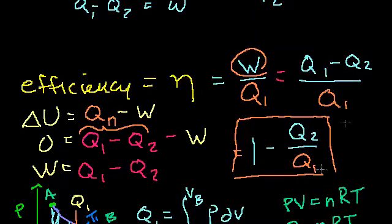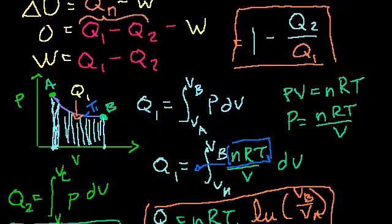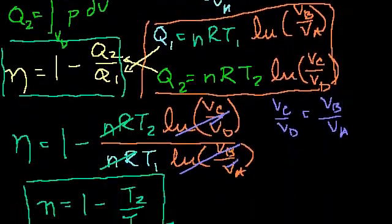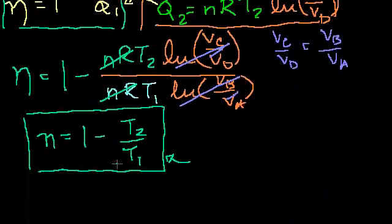Now, we applied this formula to a Carnot cycle, and we said for a Carnot engine, we could get an efficiency of this. So the efficiency for Carnot, eta for Carnot, is 1 minus T2 over T1.